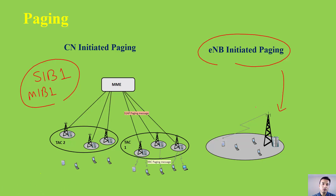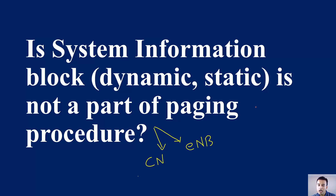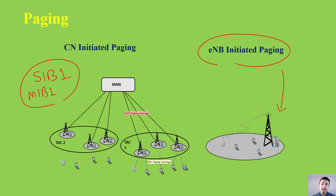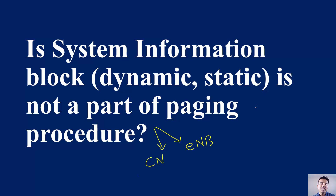Static system information will always arrive in a static, periodic way regardless of whether a paging procedure is taking place or not. To summarize: dynamic system information will always arrive as part of eNodeB initiated paging whenever there is a change. However, static information like MIB and SIB1 will always arrive periodically and are not part of the paging procedure.